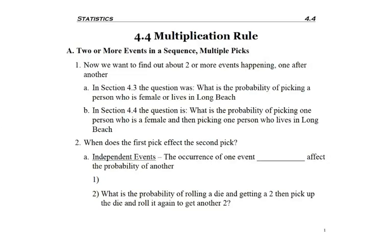So now in section 4.4 we're going to learn what's called the multiplication rule, and this is always used when you have multiple picks. So we're going to be having one or more things happen in a row, in a sequence.